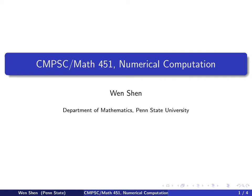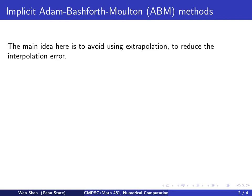Numerical Computation, Chapter 9, Video 11. In this video, we will look at a modification to the Adam-Bashforth method, the explicit one we talked about last time. The main idea here is to avoid using extrapolation to reduce the interpolation error. This eventually leads to some implicit methods.